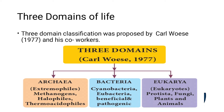Eukarya — 'eu' means true, 'karya' means nucleus — so Eukarya have a true nucleus. Protista, fungi, plants, and animals are all in the domain Eukarya. They have well-developed nuclei and membrane-bound cellular organelles.